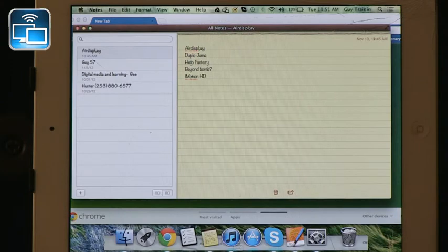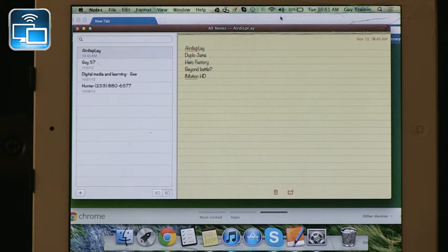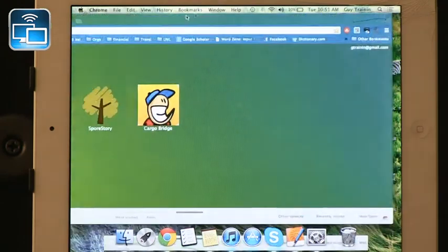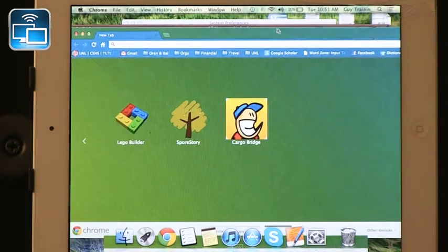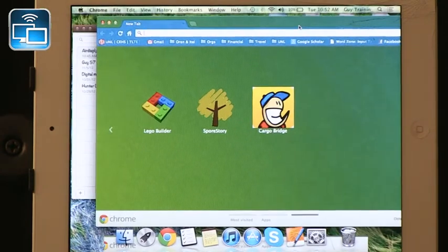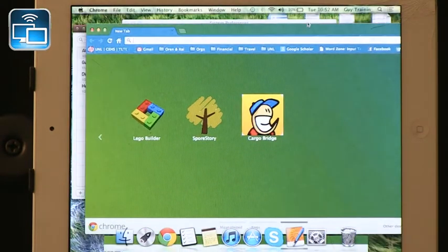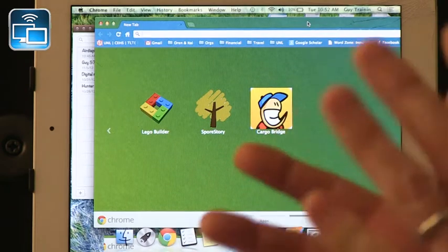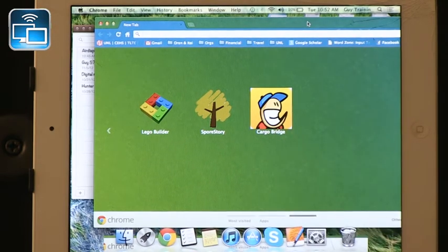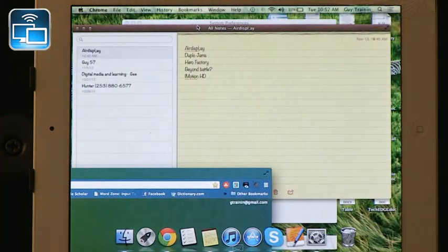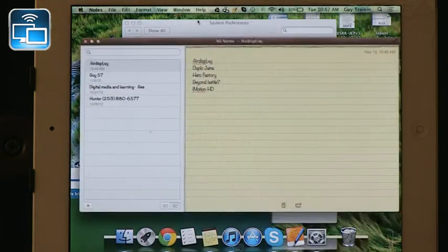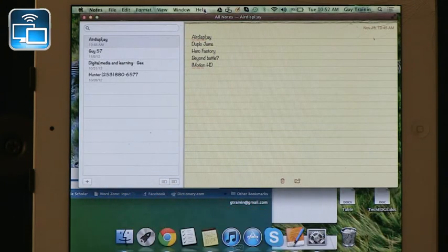AirDisplay allows you to see either the same screen or to have it as an added screen. Right now it's running as the same screen as my desktop so I can see it on two screens. But even better is when I change it and it becomes a second screen. I can move one file, let's say my notes, to this screen and now my main laptop screen can hold a different document that I'm actually editing.